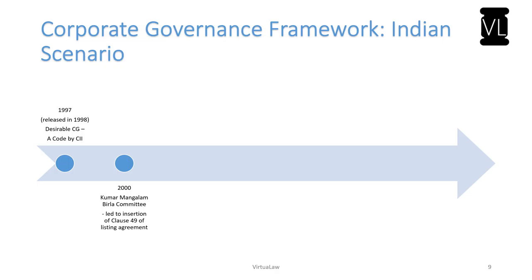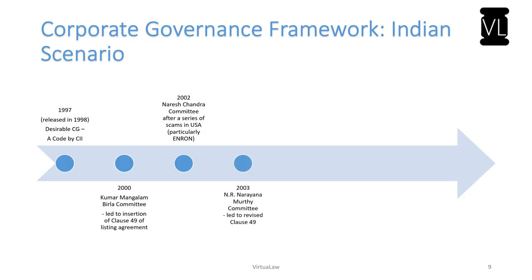In the year 2002, the Naresh Chandra Committee was constituted. This was constituted in 2002, a year linked to the Sarbanes-Oxley Act, and it was formed after a series of scams in the USA — particularly the Enron scam. In 2003, the NR Narayanamurthy Committee was constituted, which led to the revised Clause 49.